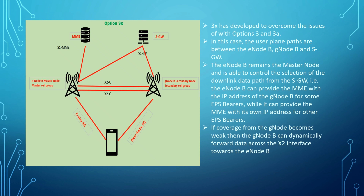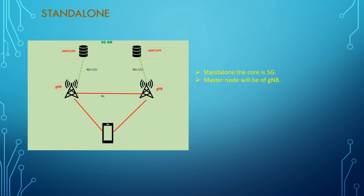The standalone architecture is very simple. In standalone, we have a 5G core and the master node will always be the gNodeB. As you can see in the simple diagram for 5G NR.